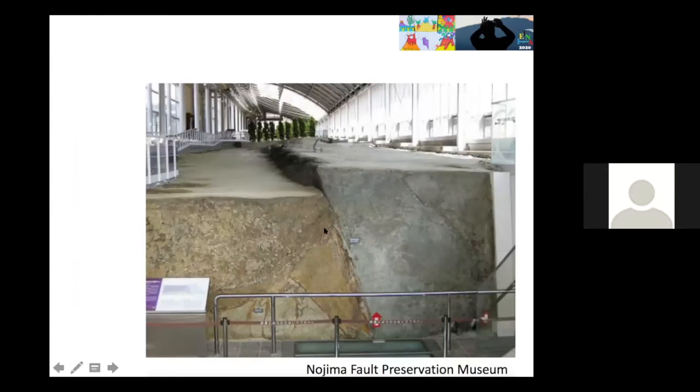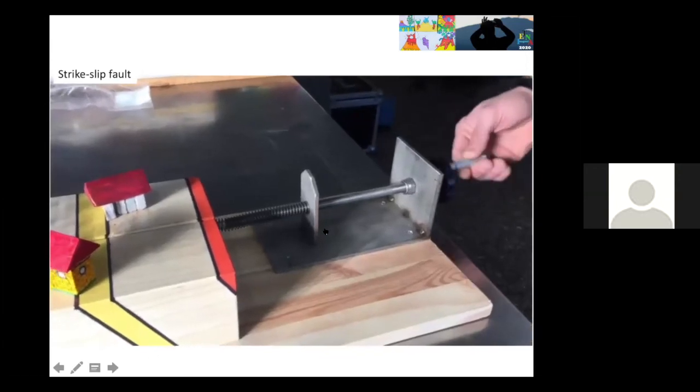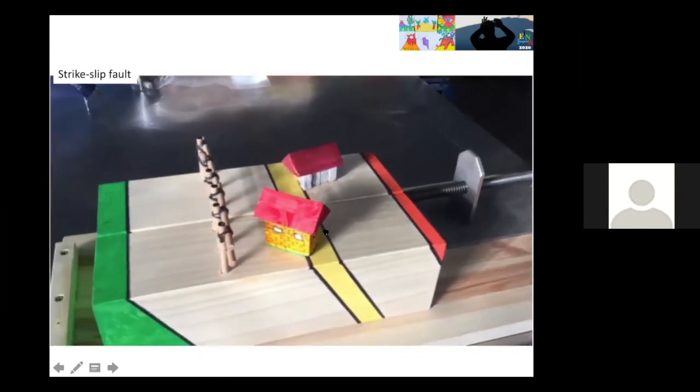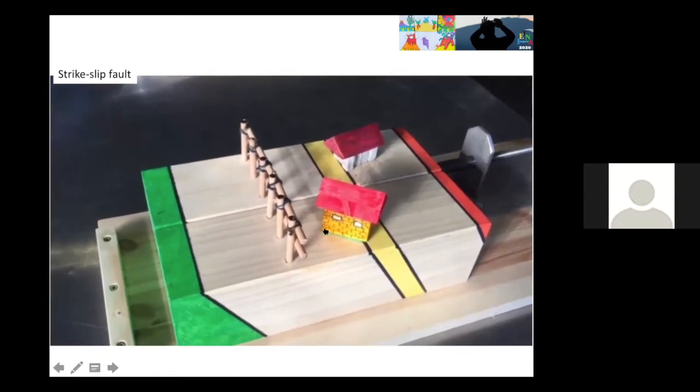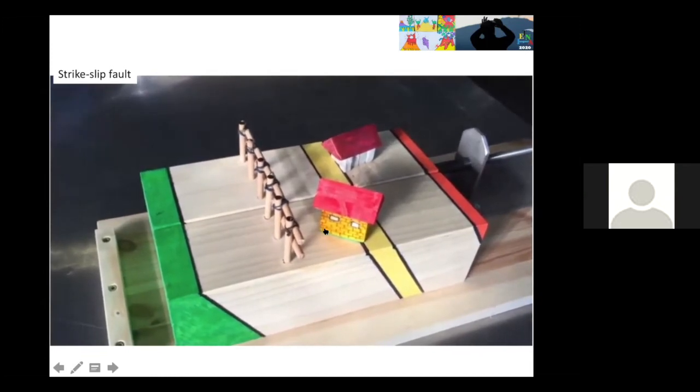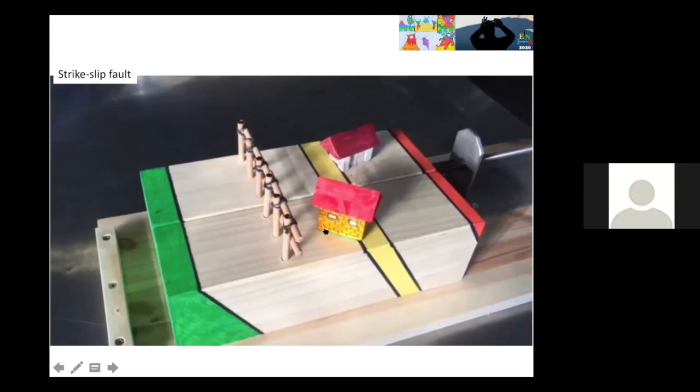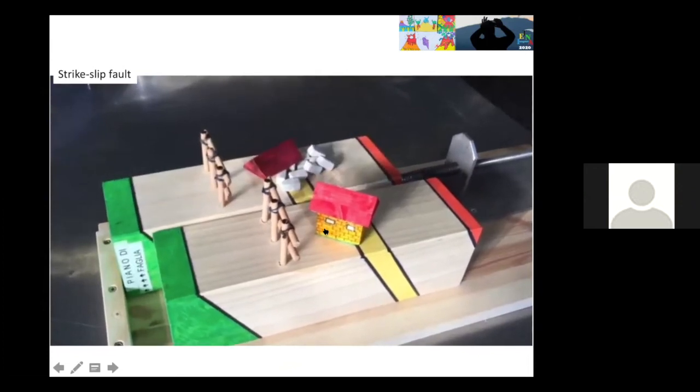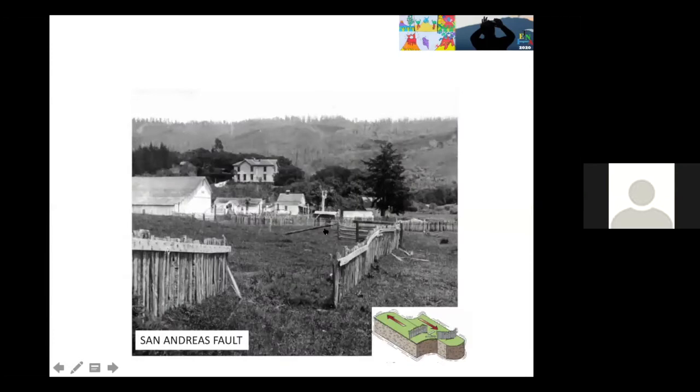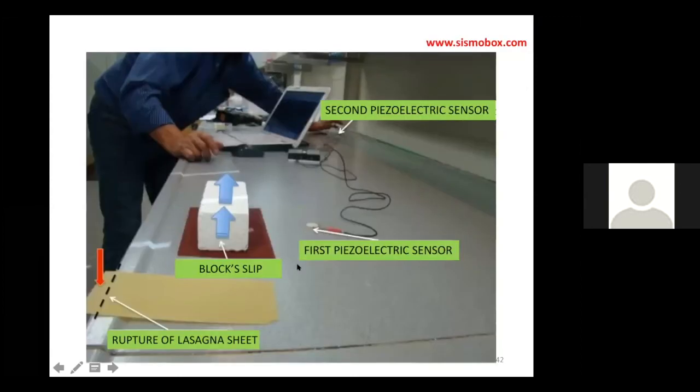The last type of fault is the strike-slip fault. We see that the blocks, when the breaking limit is exceeded, slide one next to each other. This reproduces the famous San Andreas fault. During the San Francisco earthquake, you see that the fence was dislocated a few meters after the sliding of blocks.